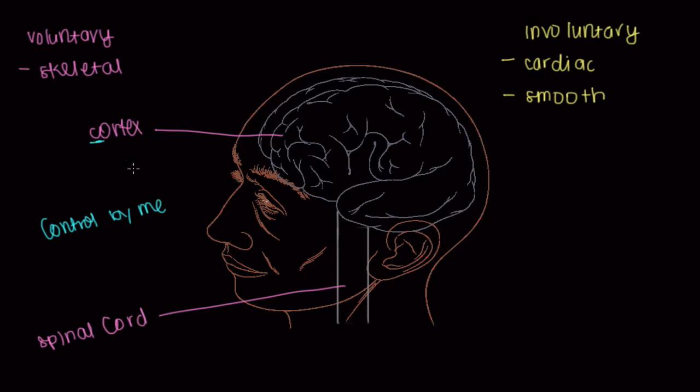then I'm going to use either my cortex, which also happens to start with a C, or my cord, which happens to start with a C. So if it's controlled by me, or if it's voluntary, that's going to be the cortex or the spinal cord that comes in handy.